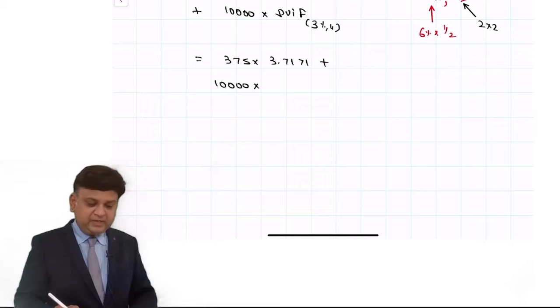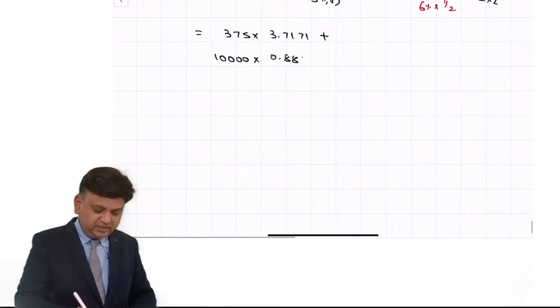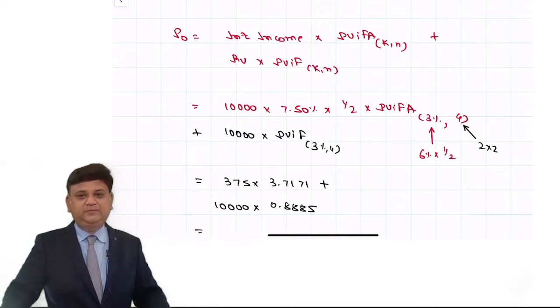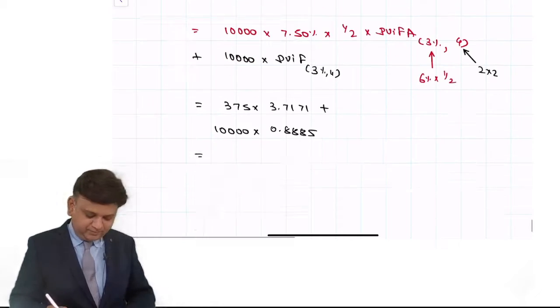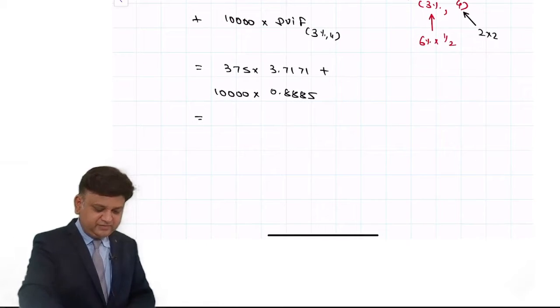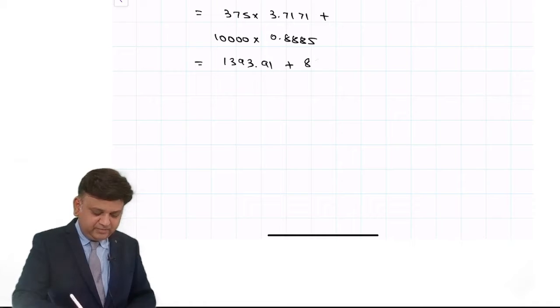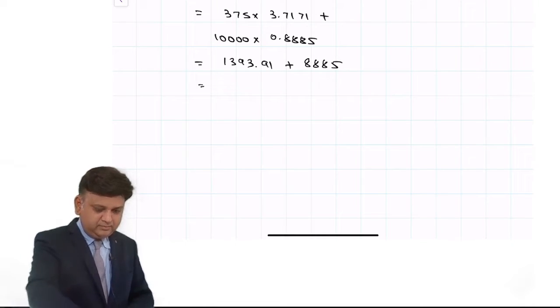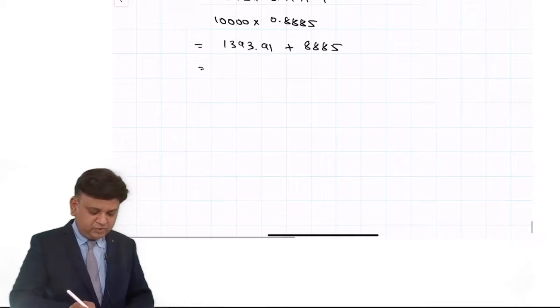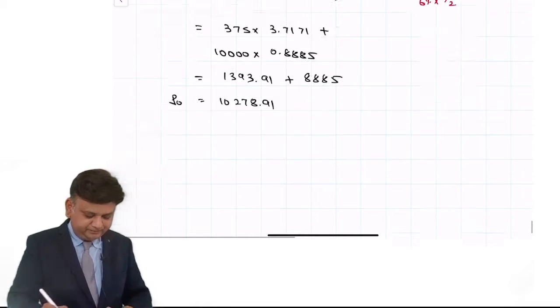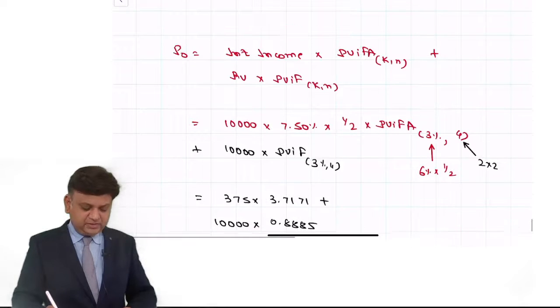4th period factor is 0.8885. That is the way the P0 is supposed to be found. So it is 375 into 3.7171, so it is 1393.91 plus 8885, so 10,278.91. That is the way the P0 is supposed to be found.